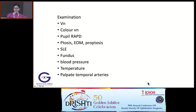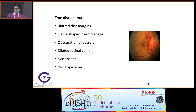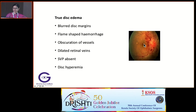In examination, we have to check vision, color vision, pupillary examination, ptosis, proptosis, extraocular movements, slit-lamp examination, fundus examination, blood pressure, record temperature, and palpate for thickened temporal arteries. These are the points to note in true disc edema: blurred disc margins, flame-shaped hemorrhages, obscuration of vessels, dilated veins, absent SVP, and disc hyperemia.